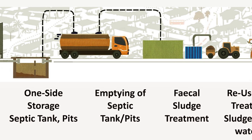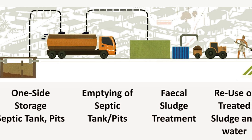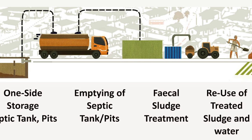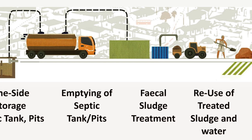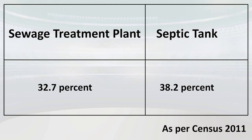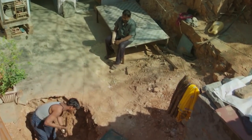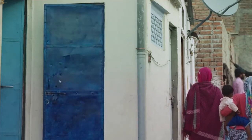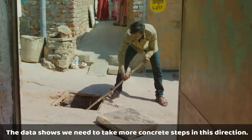The system also includes septic management for the safe collection, transportation, and treatment of human waste. Under a special process, the sewage is transported by specific vehicles to the treatment plant, where it is treated safely and effectively. According to the 2011 census, only 32.7% of urban households are connected to a piped sewer system, while 38.2% of households dispose of their sewage in septic tanks and 7% in pit toilets. The data shows we need to take more concrete steps in this direction.